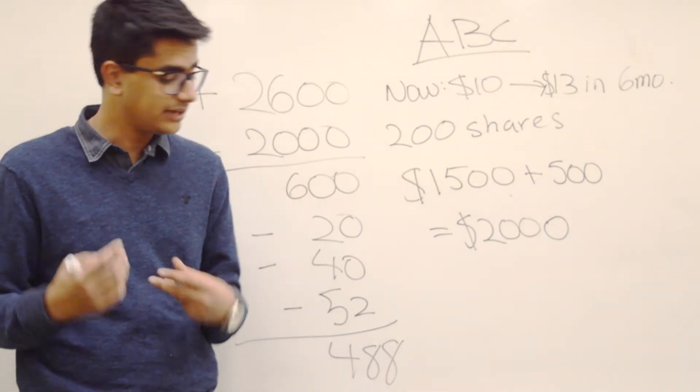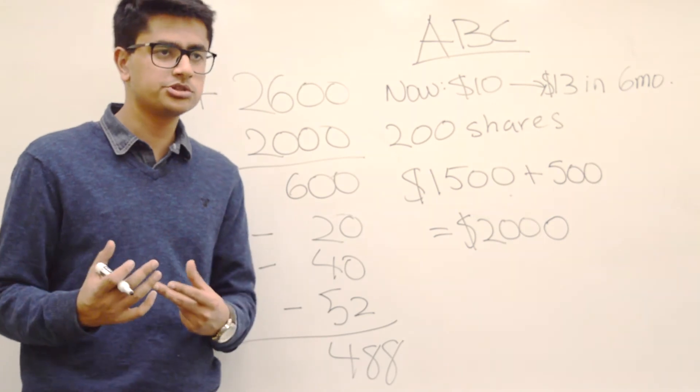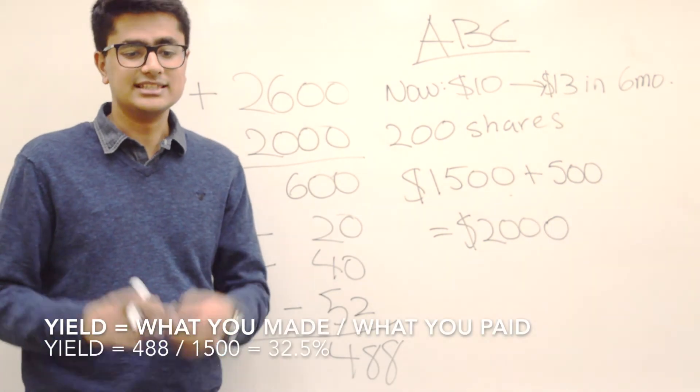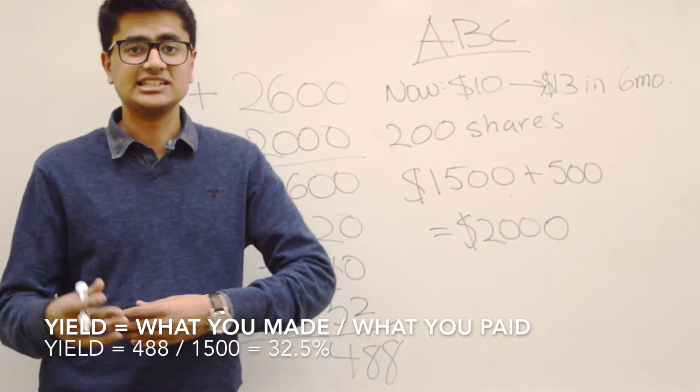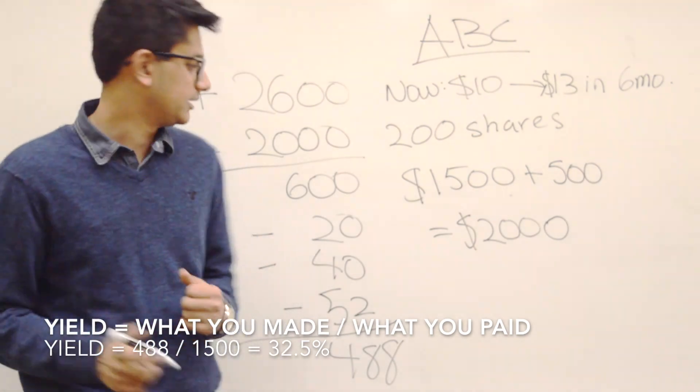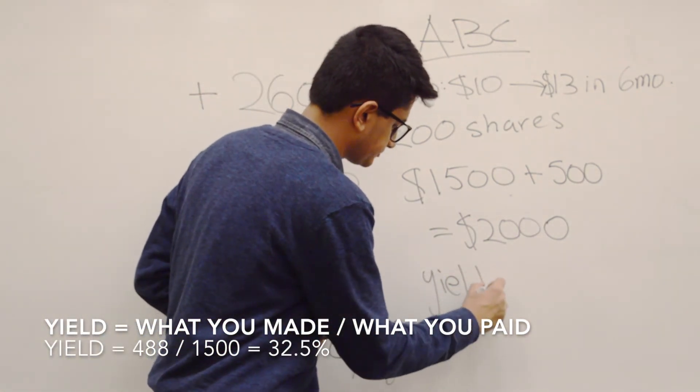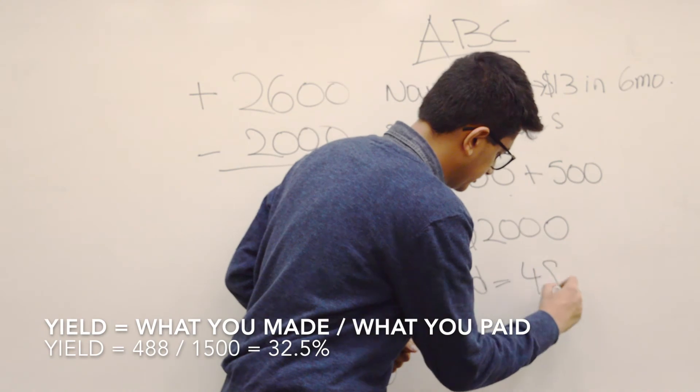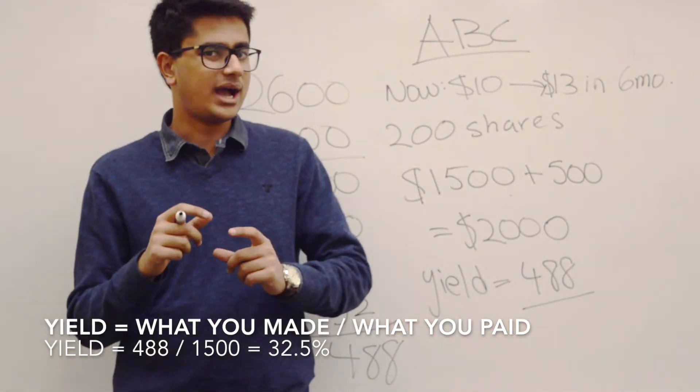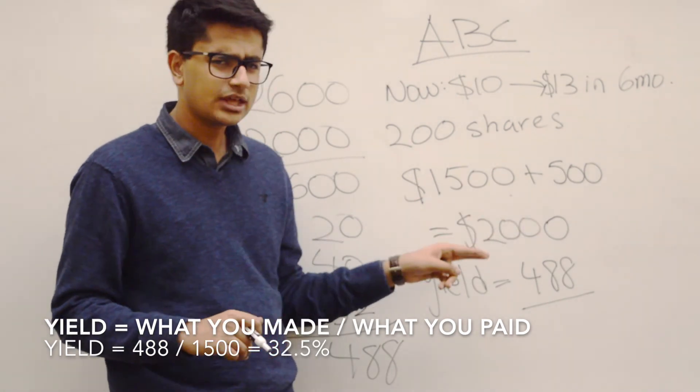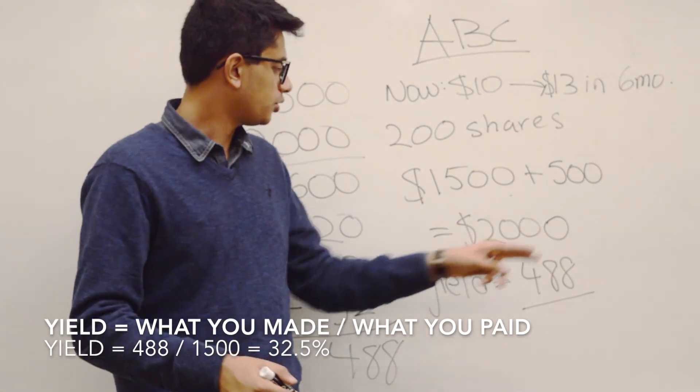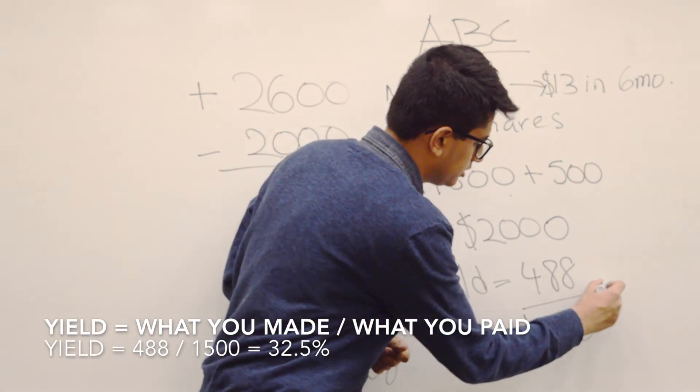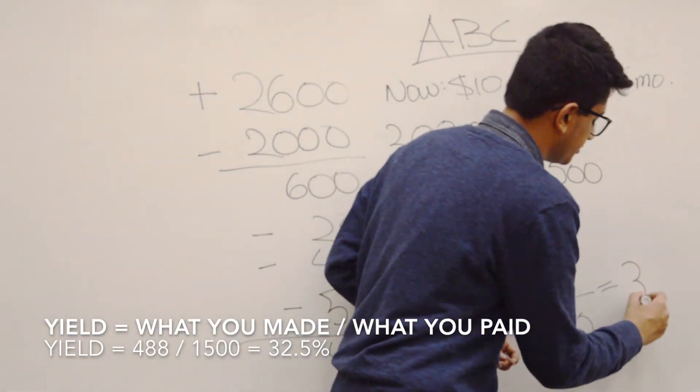You made $488. The question will usually ask you for something more specific. They'll ask you to calculate the yield. At this point, you've done all of the calculations. The yield is basically the amount of money you made, divided by the amount of money that you actually put in. The yield can very easily be calculated as the amount you made, which was actually $488, divided by how much you actually put in. Keep in mind, you invested $2,000, but you as an investor only put in $1,500 of your own money. So you divide that by $1,500.